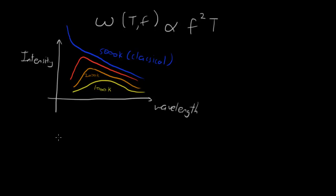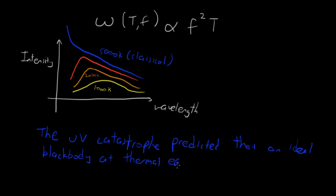So what the ultraviolet catastrophe was, it predicted that an ideal black body, and I'll explain what black body is in a second, an ideal black body in thermal equilibrium will emit radiation with infinite power.